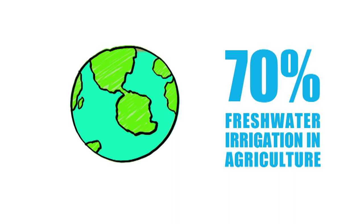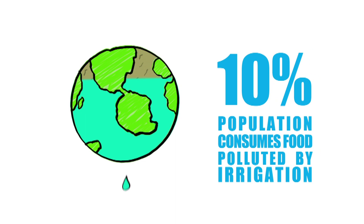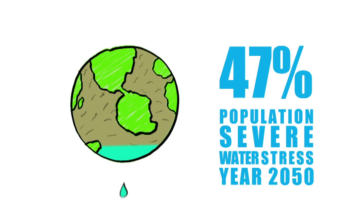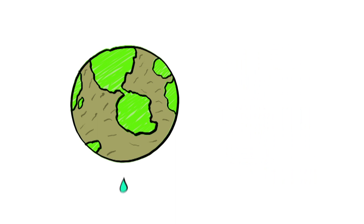70% of the world's water is used for farming. 10% of us eat food grown with dirty water. 47% of us could suffer from severe water scarcity by 2050.